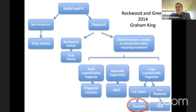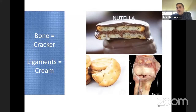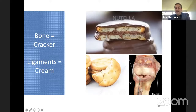Getting back to the diagram: if we have a displaced radial head fracture blocking motion, with large unpredictable fragments, and — most importantly — ligaments are intact, then we can excise the head. The intact ligaments are the most critical factor, but we cannot always confirm ligament integrity at the time of injury or even during surgery. As an analogy, if we consider bone as a cracker and ligaments as the cream, when we break the cracker, the cream also breaks. Therefore, when we see a fracture on X-ray, we should think that the ligaments may also be attenuated or disrupted.